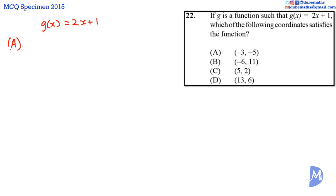g(-3) = 2(-3) + 1, which gives -6 + 1, which equals -5. Negative 5 is given as the second element of the ordered pair. Thus, the answer is A.